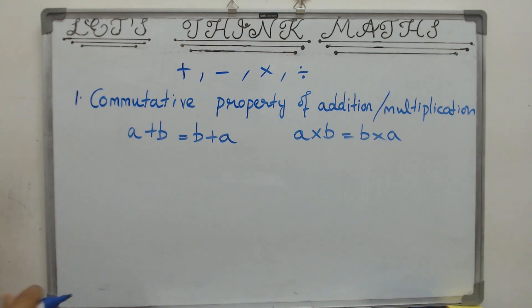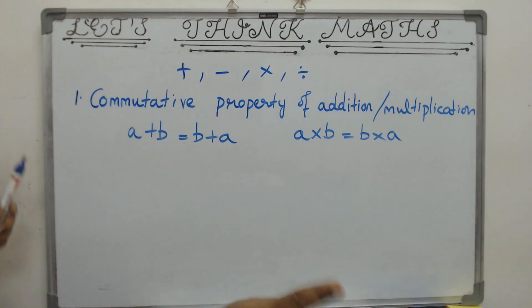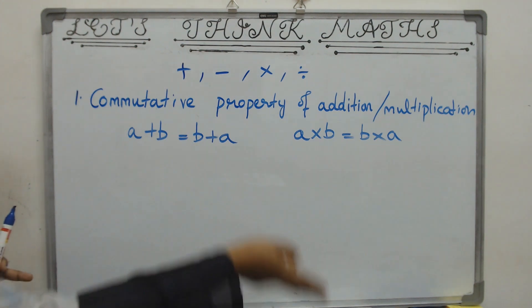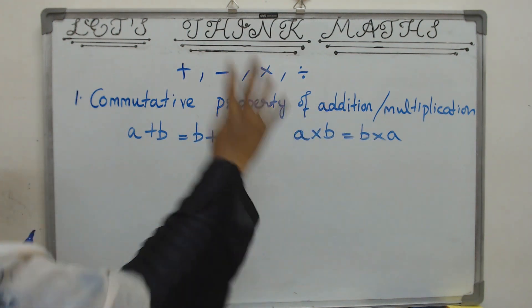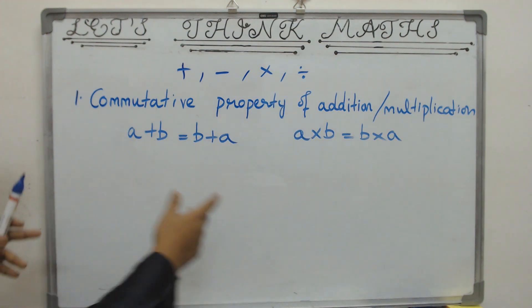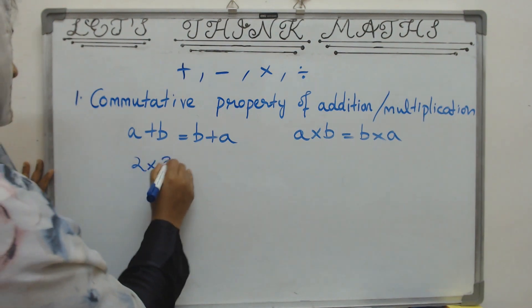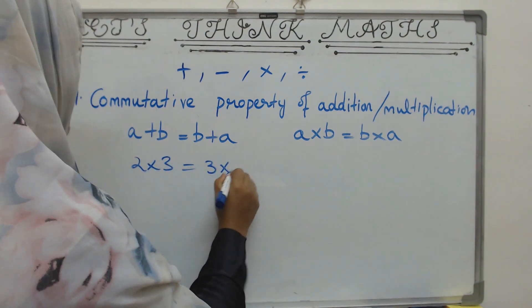What are this a and b? They belong to any of those five number systems we studied in the last class: natural numbers, whole numbers, integers, rational numbers, and real numbers. So you take any two natural numbers, any two integers, any two real numbers and you add them or multiply them — the answer does not depend on the order. For example, 2 into 3 will be the same as 3 into 2.